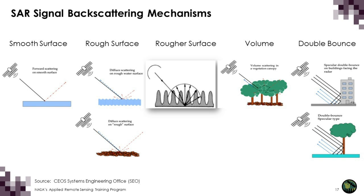The final backscatter mechanism is called double bounce. This results when two smooth surfaces create a right angle that deflects the incoming radar signal off both surfaces, causing most of the energy to return to the sensor. These areas appear very bright in radar images and are commonly seen in flooded vegetation because of the interaction between the smooth water surface and the vertical structure of vegetation such as trunks. Double bounce also occurs in urban areas, which is a common source of confusion when identifying flooding.